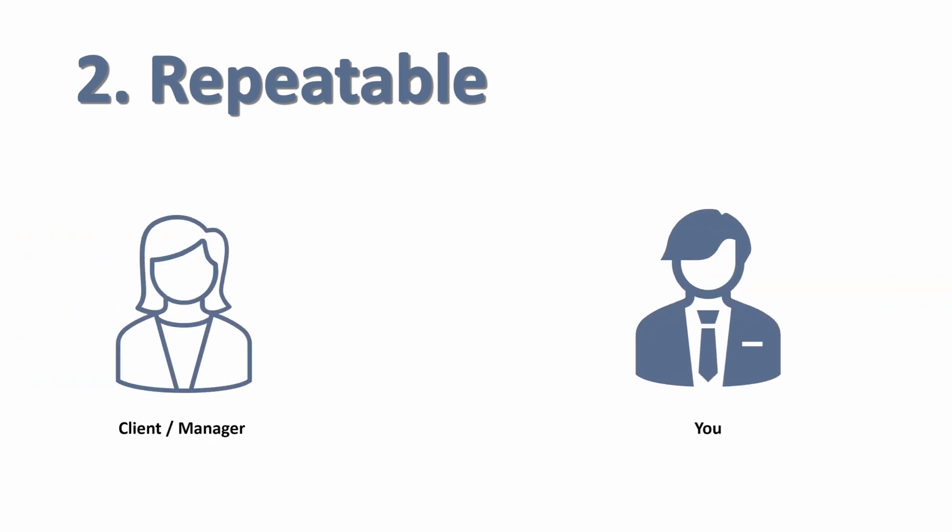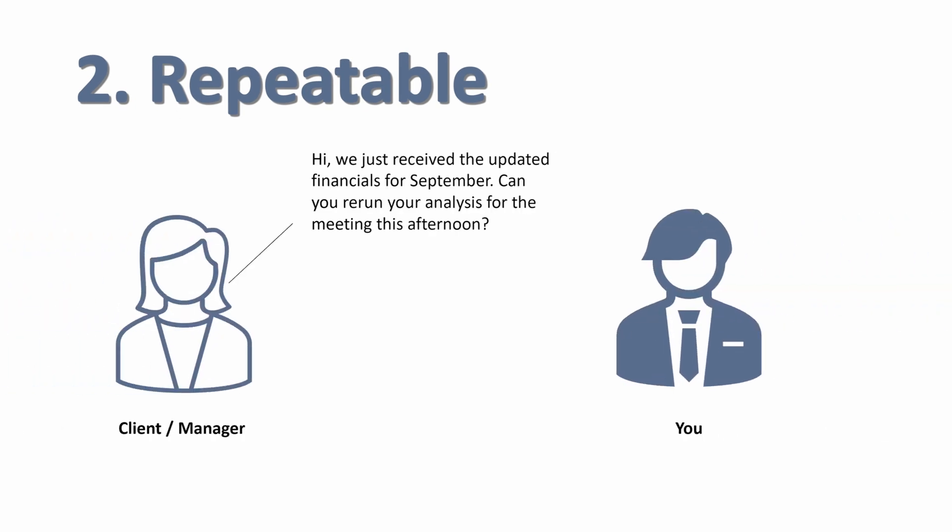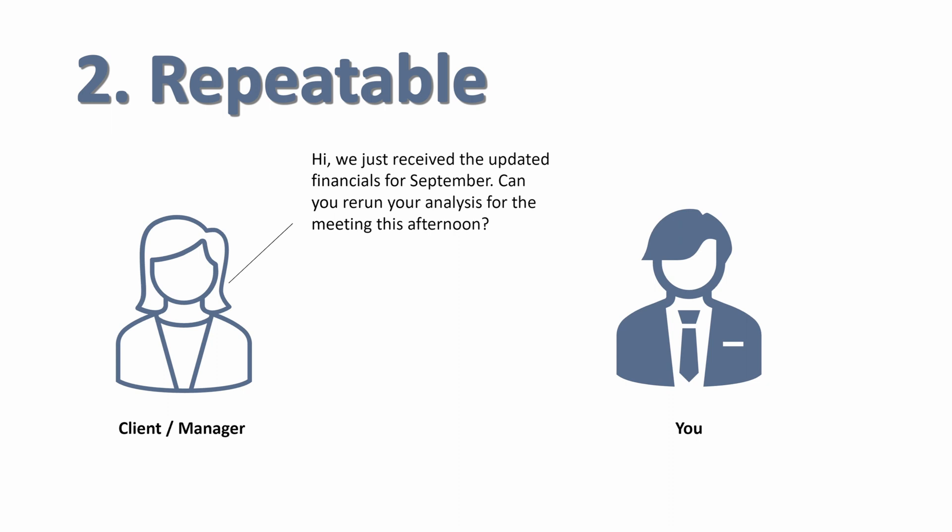Number two priority is repeatable. Let's look at another situation: your manager or client comes in and says, we just received the updated financials for September — I know we only had this through August. Can you rerun your analysis for the meeting this afternoon? This happens pretty frequently, and most managers will expect you to be able to update a model or existing data file pretty quickly. Setting your model up to be repeatable is very important and will be very beneficial in the long run.